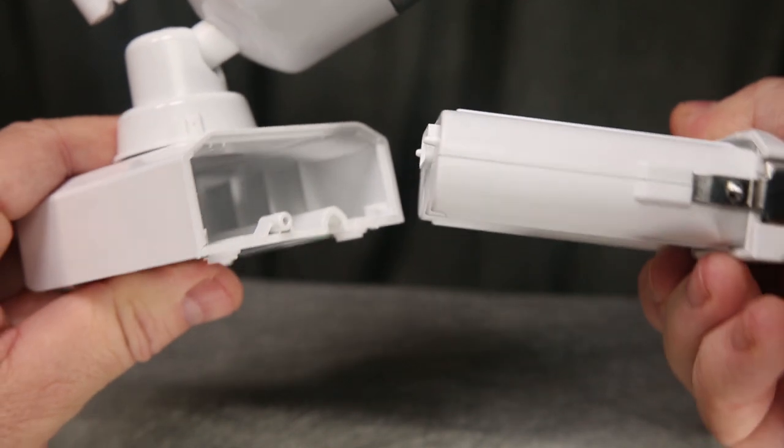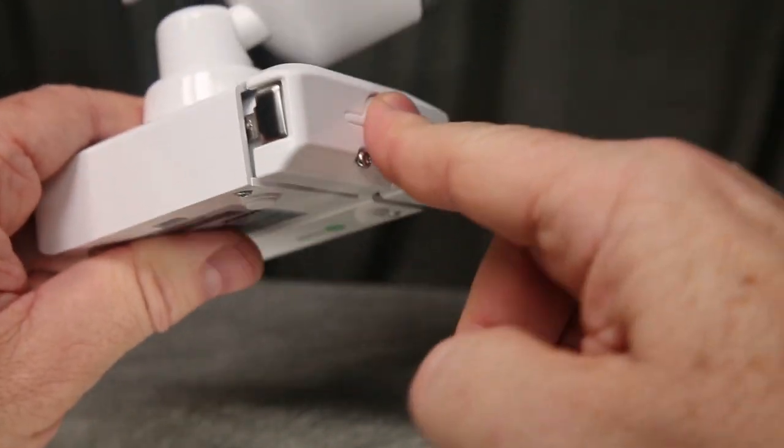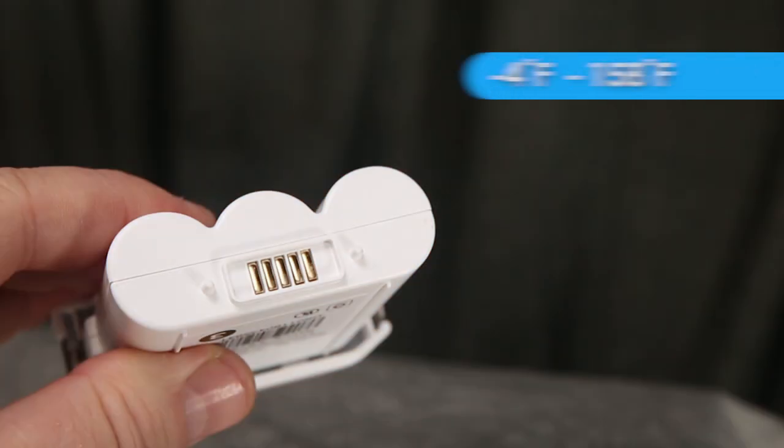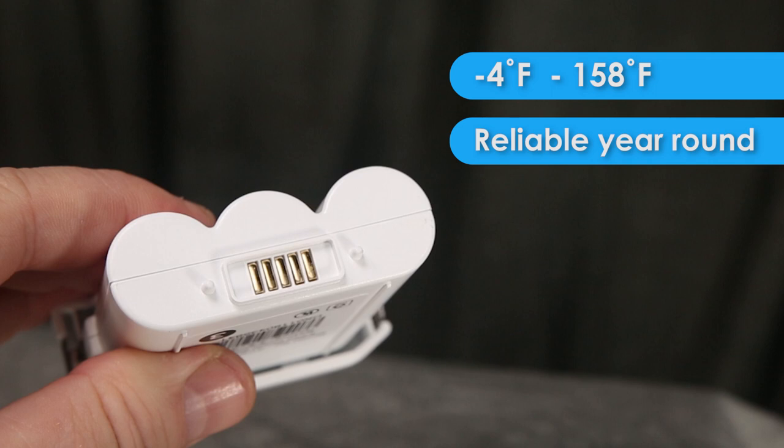The camera is powered by lithium-ion batteries designed to be long-lasting, keeping recharging to a minimum. They are rated to operate from minus 4 to 158 degrees, making them reliable throughout the seasons.